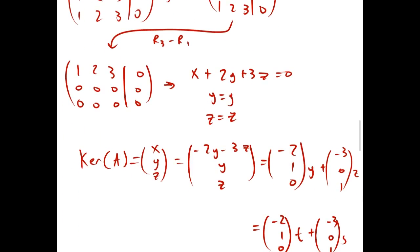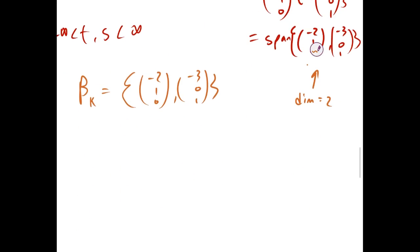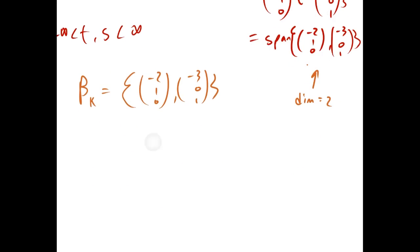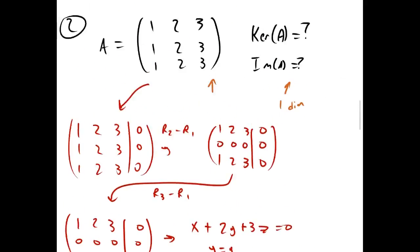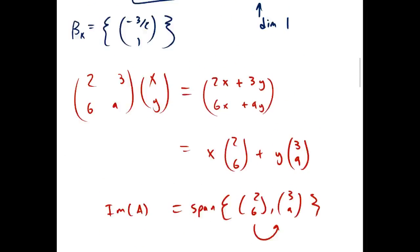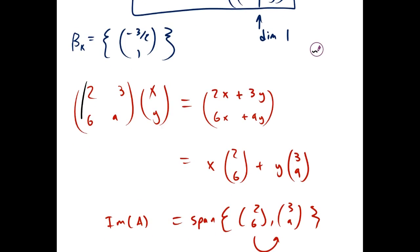And actually a shortcut to find the image, if we go back to the other example, is each of these columns will end up being one of the vectors that spans the image. You just have to remove the redundant ones that aren't linearly independent. So, we removed this one last time because it was just a multiple of this one.